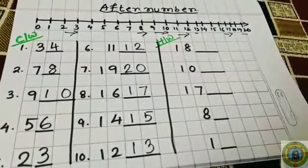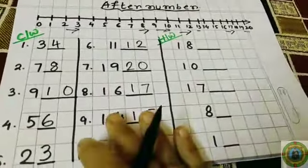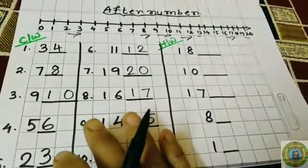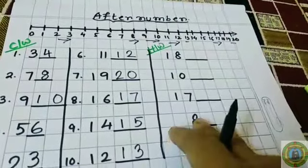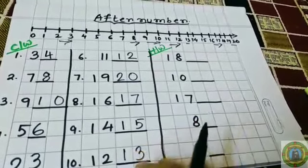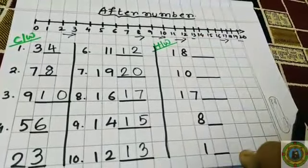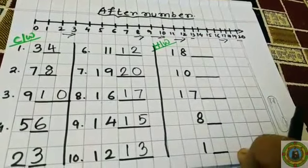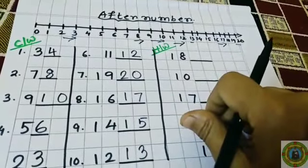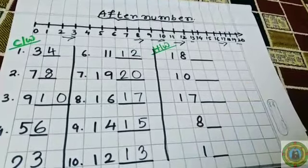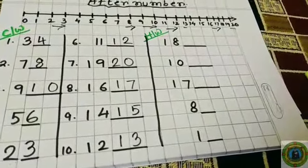I hope you all have understood what is after number. This work you have to complete in your classwork copy. This is your classwork and this is your homework. You have to complete this only in your classwork copy. You practice at home. Parents, please help your child.